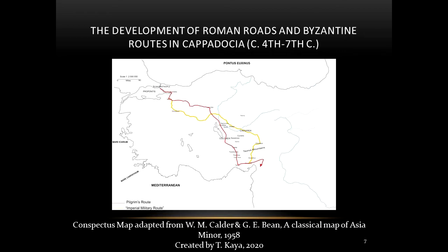When Christianity became the official religion of the Roman Empire, the administrative system of the Cappadocian cities changed. By the early 4th century, Christian bishops, supported by the state, started to demonstrate personal influence and authority in matters concerning towns and cities in Cappadocia. Christianity, the Christian church, and the Christian bishop played a dominating role in the administrative system and public life of the empire.